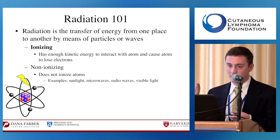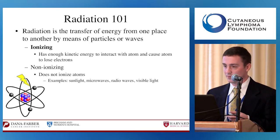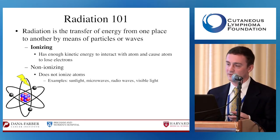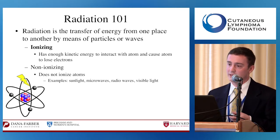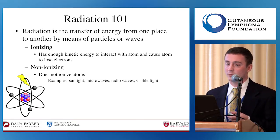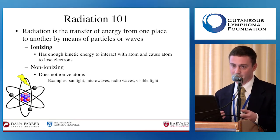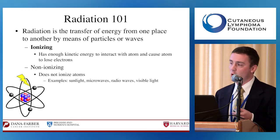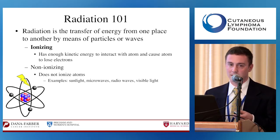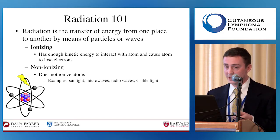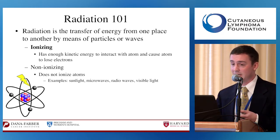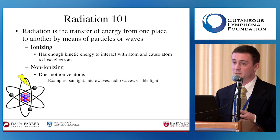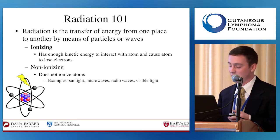Radiation targets proliferating cells. So it's targeting the malignant cell, but it's also targeting normal cells that are proliferating. An ideal therapy would only target the malignant cell and spare normal cells. Radiation oncologists plan to treat the tumor while trying to spare as much of the surrounding normal tissue as possible.